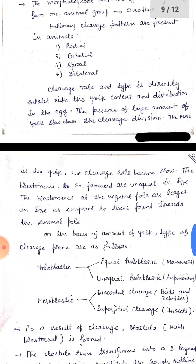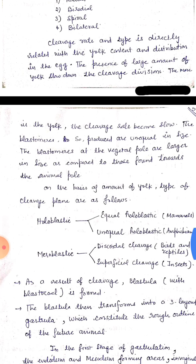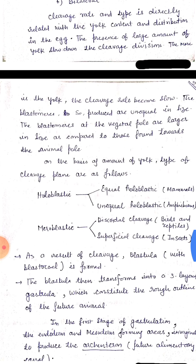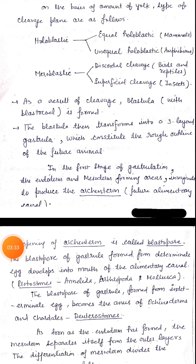Cleavage rate and type are directly related to the yolk content and distribution in the egg. The presence of a large amount of yolk slows down the cleavage division — the more the yolk, the lower the cleavage rate. The blastomeres so produced are unequal in size. The blastomeres at the vegetal pole are larger in size compared to those towards the animal pole. Blastomeres at the vegetal pole are called macromeres, while blastomeres at the animal pole are called micromeres. So, on the basis of amount of yolk, the types of cleavage planes are as follows.